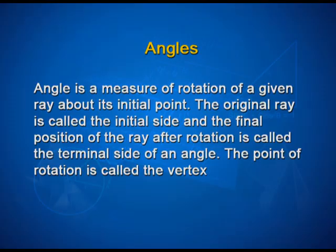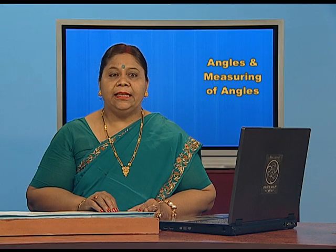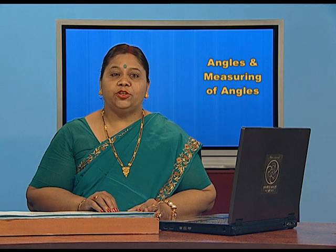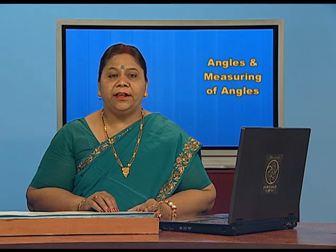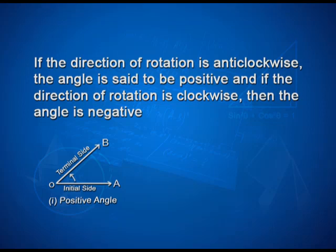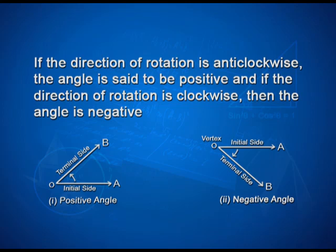What is an angle? An angle is a measure of rotation of a given ray about its initial point. The original ray is called the initial side, and the final position of the ray after rotation is called the terminal side of an angle. The point of rotation is called the vertex. If the direction of rotation is anticlockwise, the angle is said to be positive. And if the direction is clockwise, then the angle is negative. Looking at the figure: when the direction of rotation is anticlockwise, the angle is taken as positive, and if the direction is clockwise, the angle is negative.